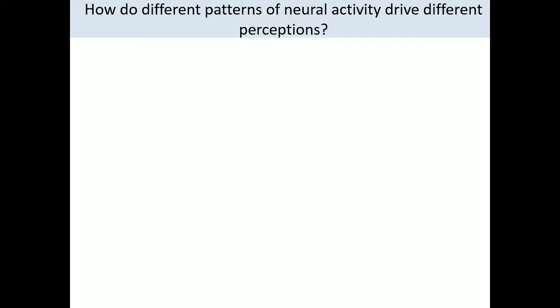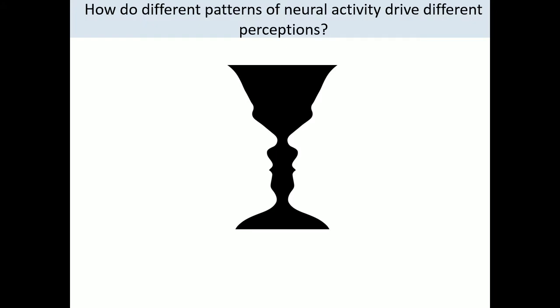How do different patterns of neural activity in our brain drive different sensory percepts? You're probably familiar with this image — you can see the faces, or you can see the cup. Neuroscientists think that somewhere in your visual cortex there's a group of neurons encoding this percept through their population activity: a pattern of spikes from single neurons in space and time. When you see the face, you get one pattern; when you see the cup, you get the other. But we have no way in neuroscience to causally test this hypothesis and ultimately break this neural code or understand its key syntax and logic.